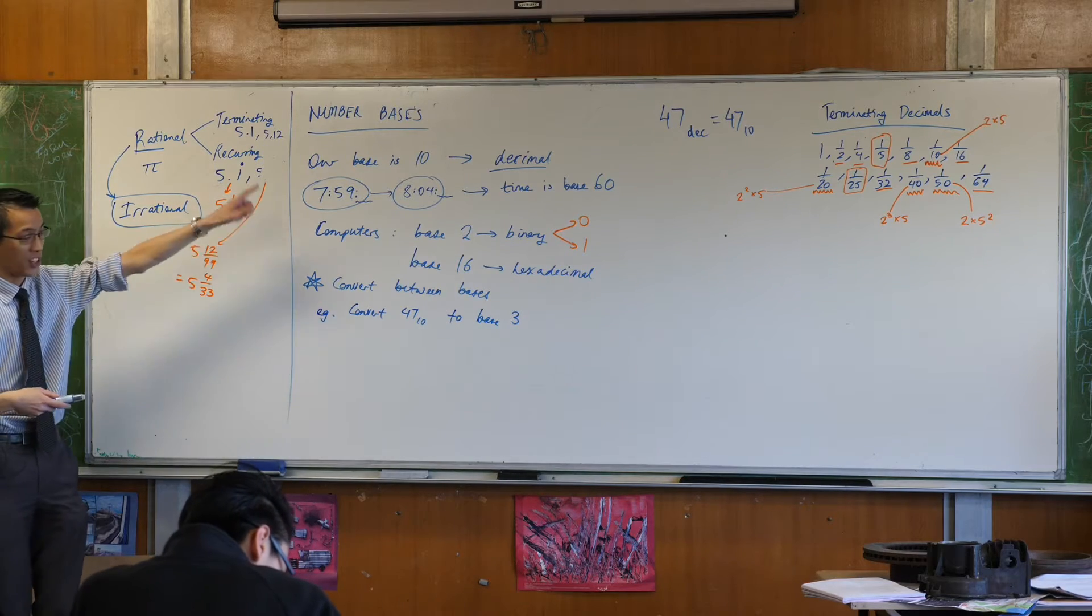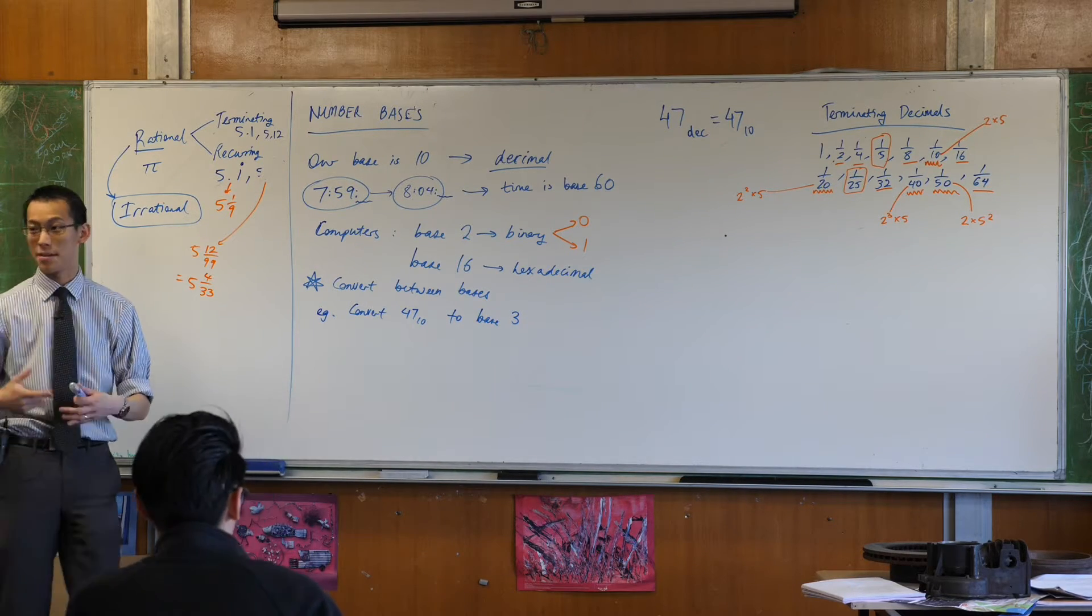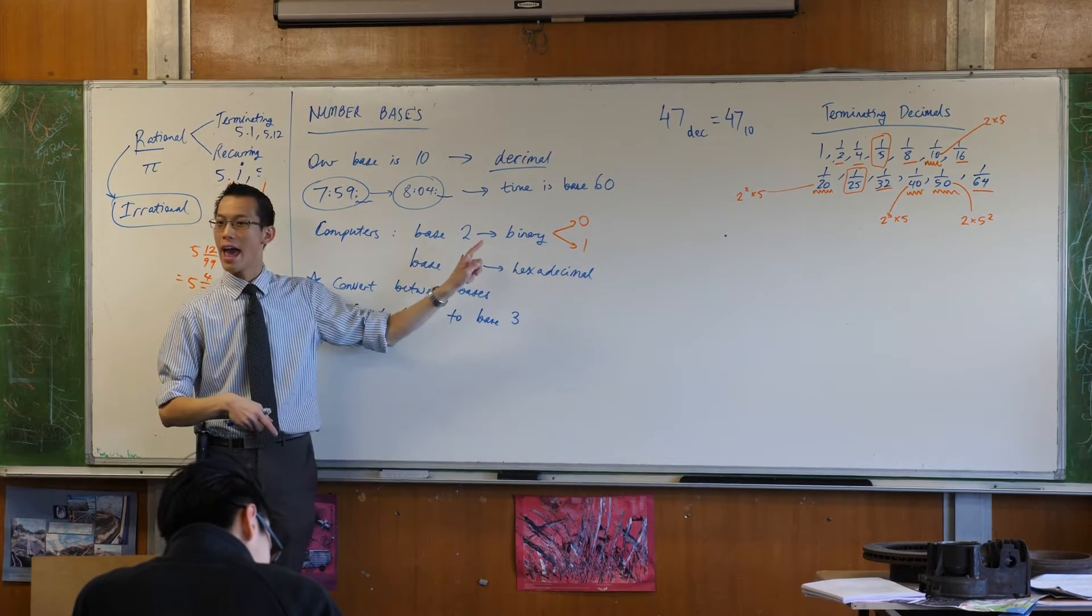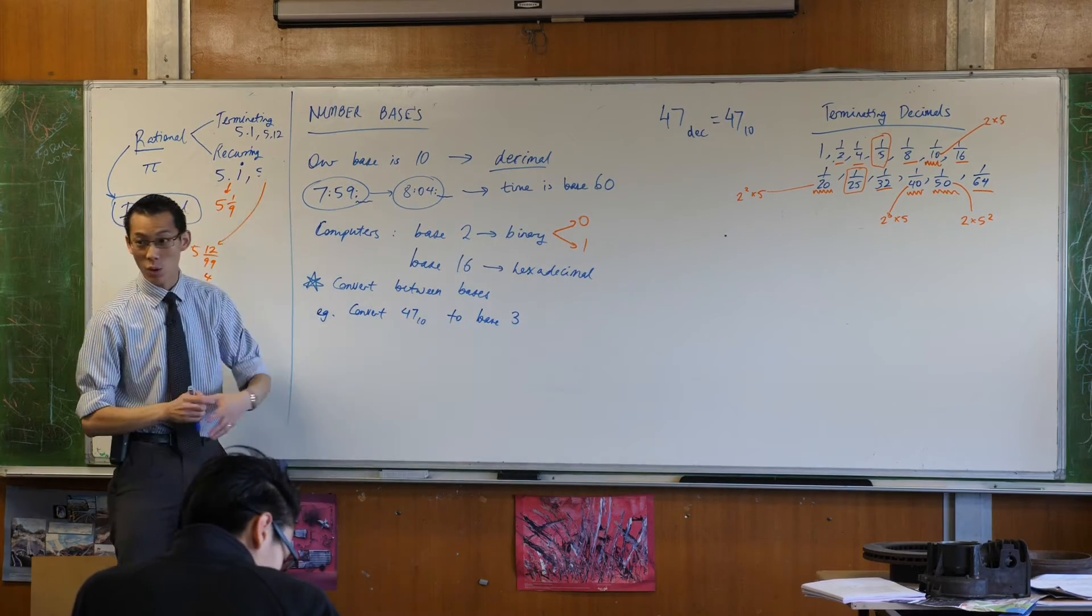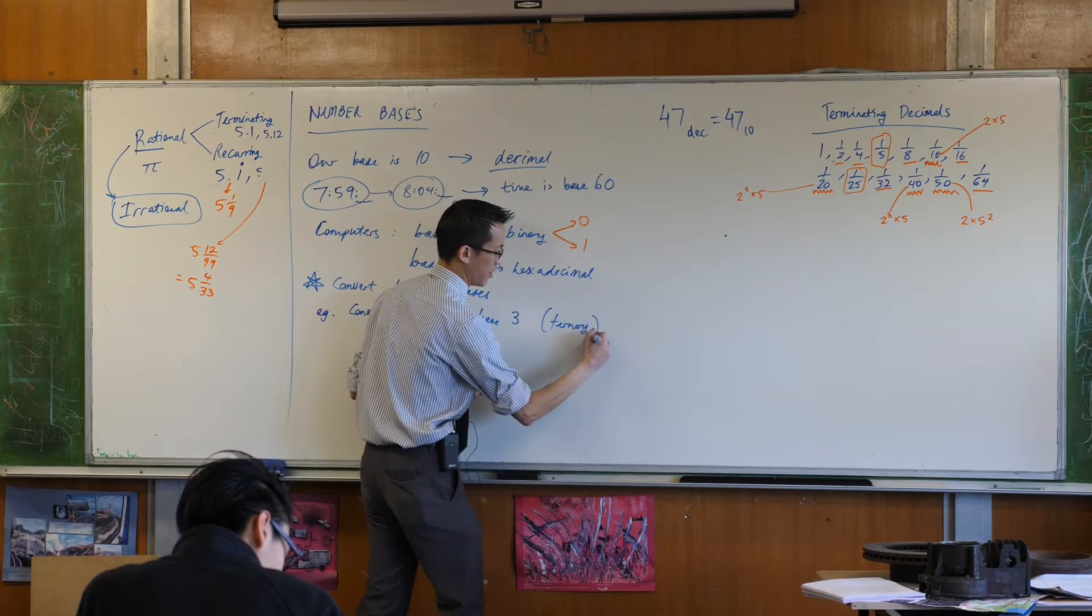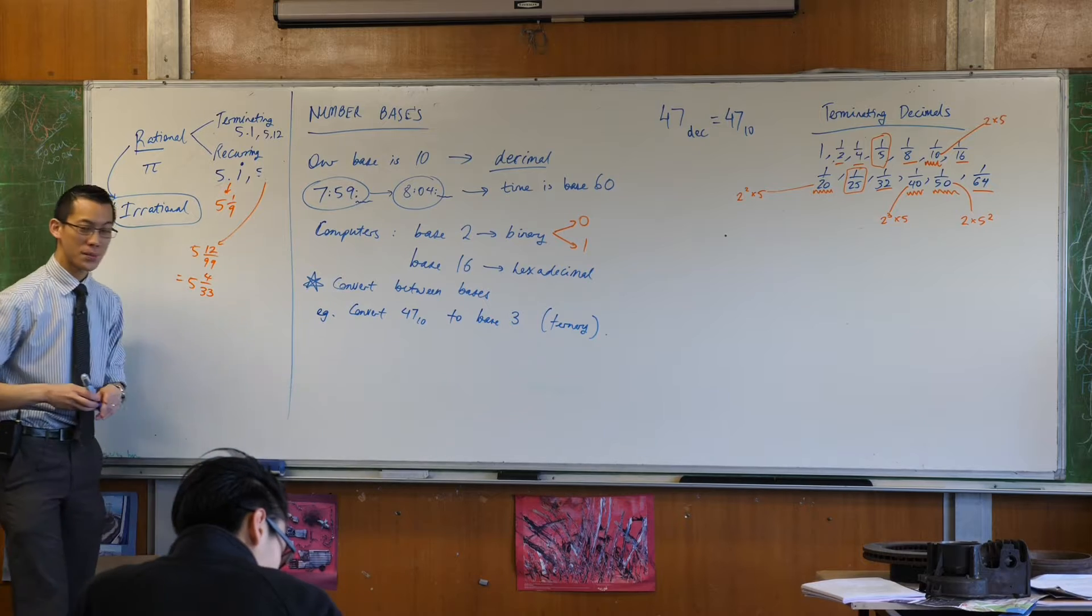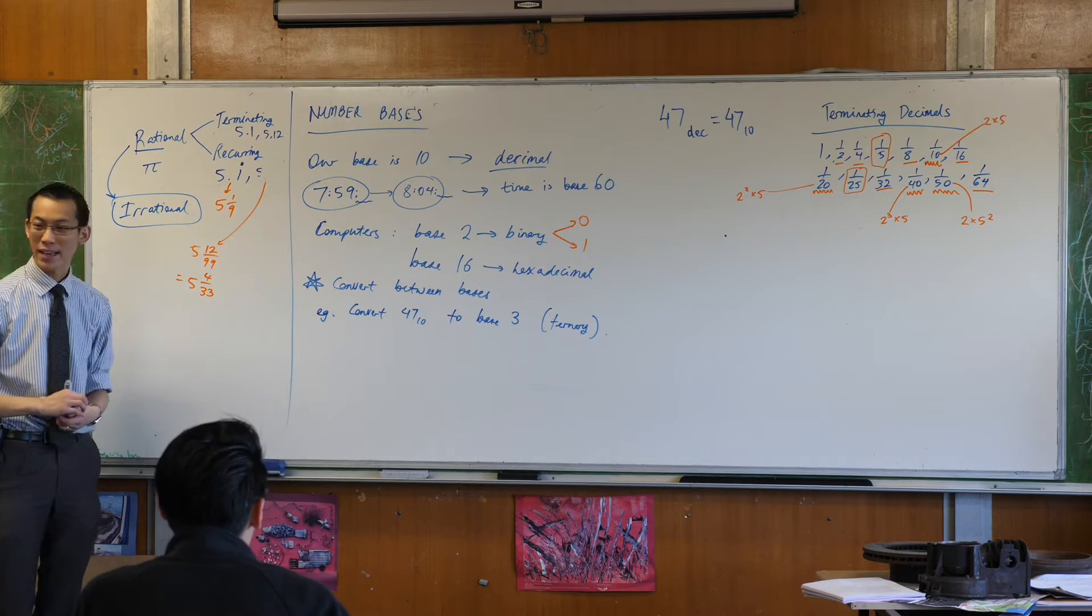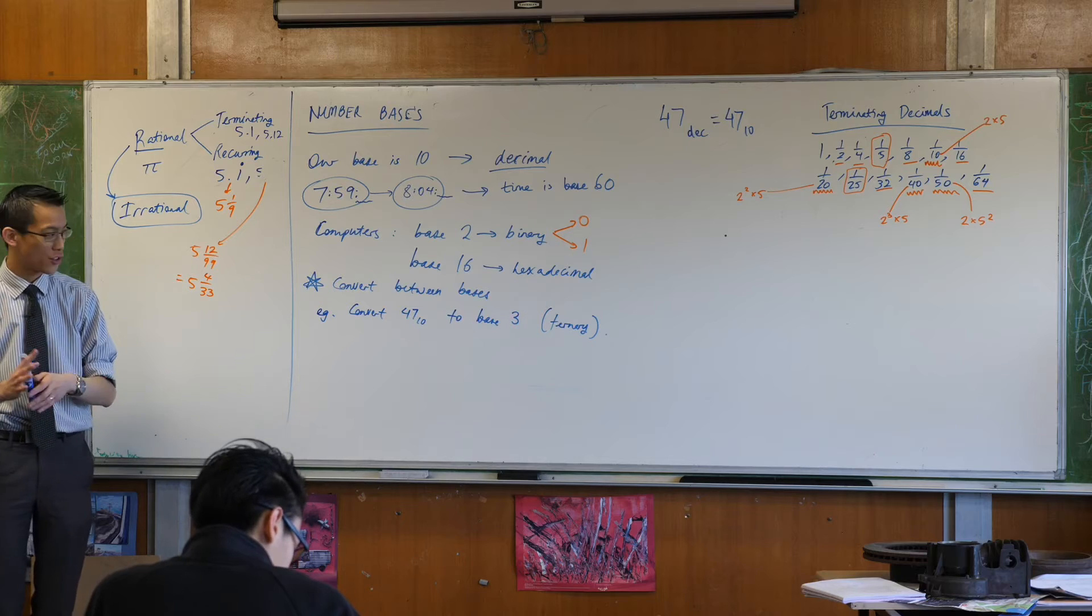Now you've seen just here that a lot of the bases have names. So base 10 is decimal, base 2 is binary, base 16 is hexadecimal. Base 3 also has a name it's called ternary. It's very uncommon but you can do some cool card tricks with it and if we have time I'll show you one but we'll see how we go. How do we convert it? Let me show you how.